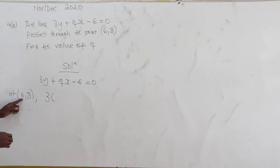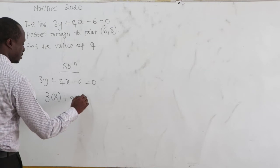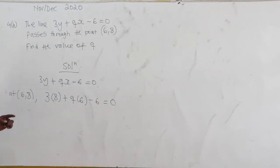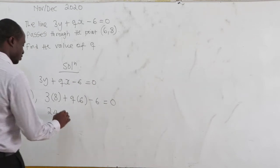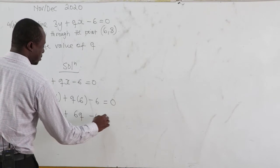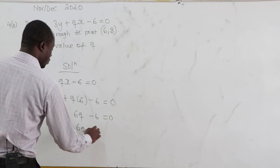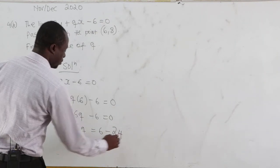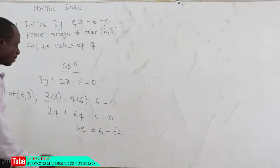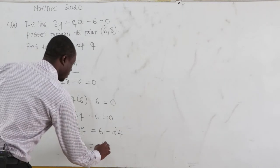At the point (6,8), our x is 6 and our y is 8. So 3(8) plus q(6) minus 6 equal to 0. Now 3 times 8 is 24. So we have 24 plus 6q minus 6 equal to 0. Now let's group like terms. So we have 6q equal to 6 minus 24. This gives us 6q equal to negative 18.